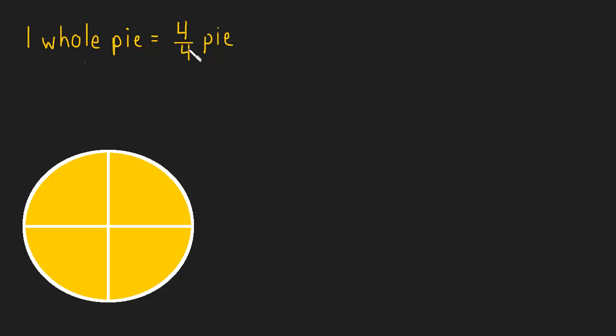And this would be true no matter what number we chose. So we could have four out of four pieces. We could have seven out of seven pieces of pie. We'd still have the whole thing. We could have a thousand and one out of a thousand and one pieces of pie. If we cut the pie into a thousand and one pieces and then we take all thousand and one of them, well, we have the whole pie.